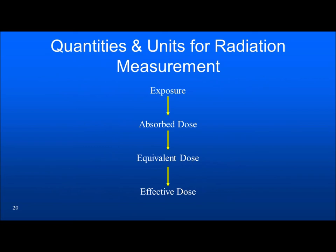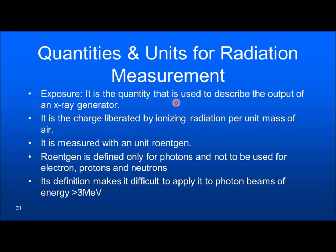We will now look at quantities and units. Starting with exposure: exposure describes the output of an X-ray generator — the ability of radiation to ionize air. It is the charge liberated by ionizing radiation per unit mass of air, measured in roentgen. Roentgen is defined only for photons, not for electrons, protons, or neutrons, and only for photon energy less than 3 MeV. Exposure cannot be used as a measure for higher energies or other radiations like electrons, protons, or neutrons.